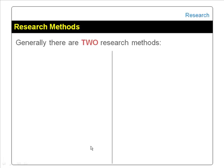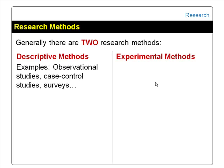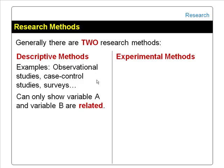Next, we look at two research methods: the descriptive method and the experimental method. Observational studies, case control studies, and surveys are all examples of descriptive research methods.